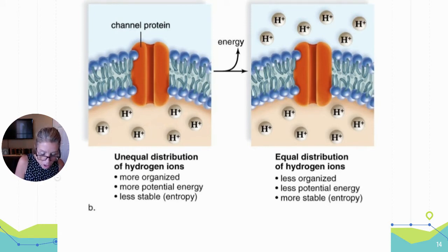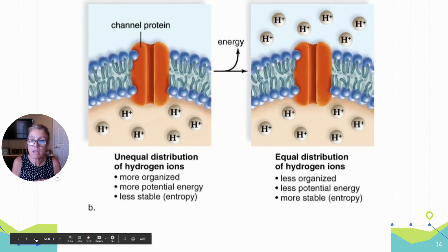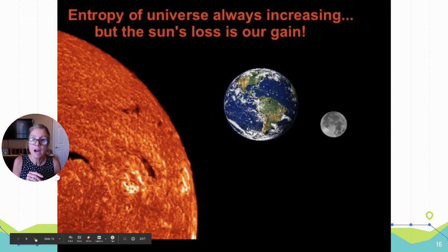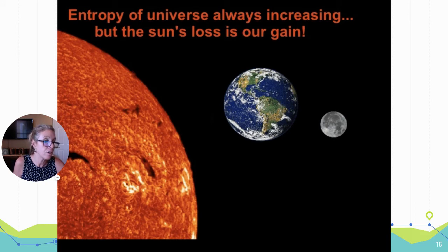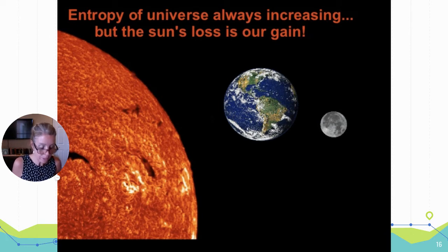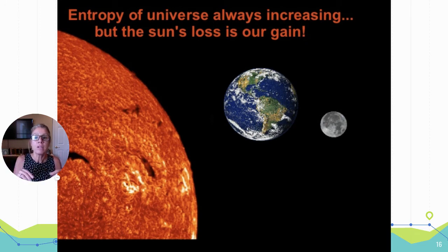On your summary notes: energy conversions result in heat. Therefore, the entropy of the universe is always increasing. We need an input of energy to fight entropy in our own bodies and to maintain homeostasis. Our universe is going to greater and greater entropy — the sun's loss is our gain.